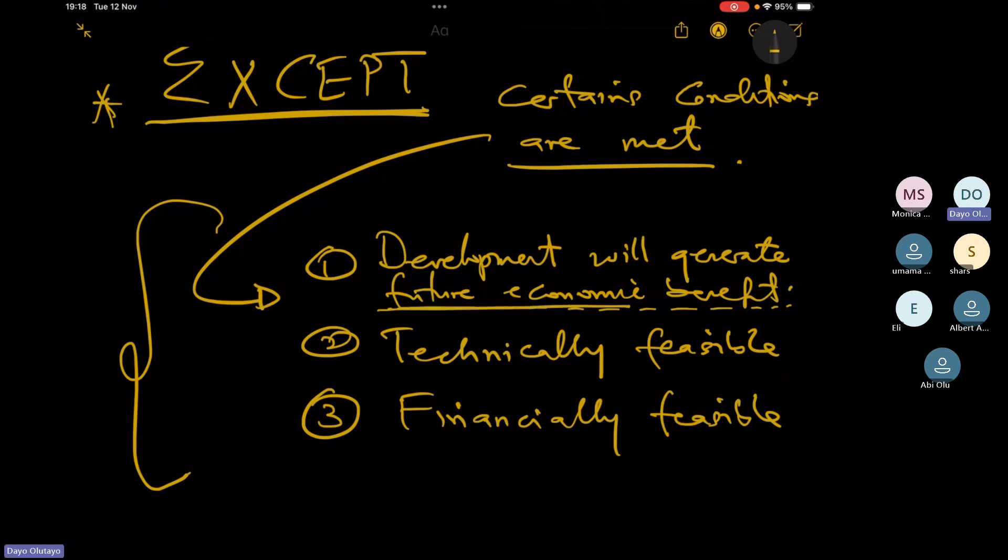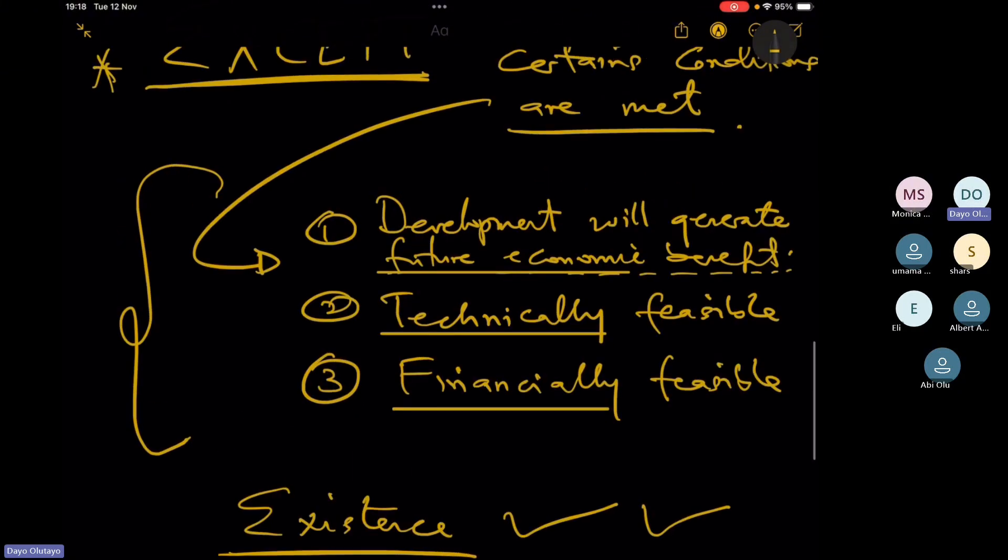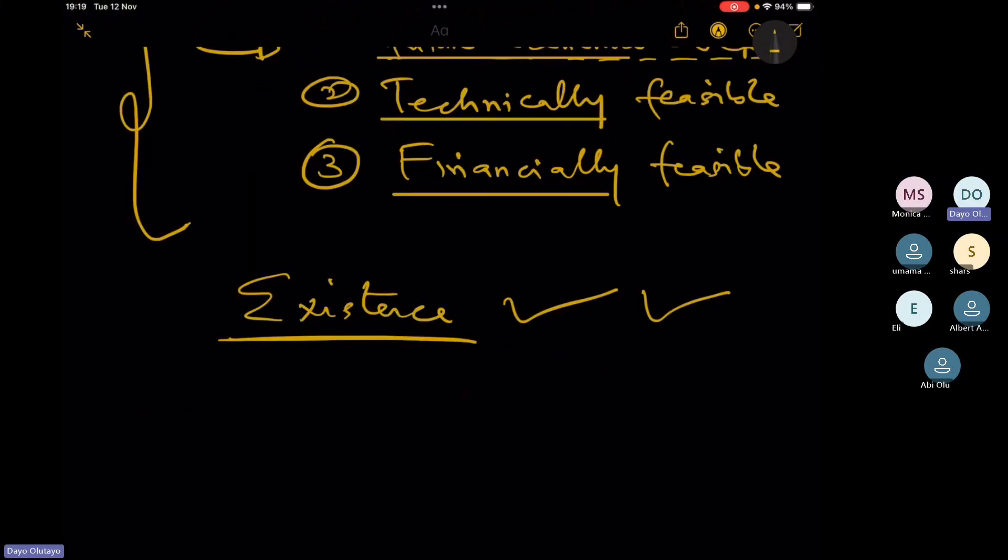Future economic benefits, technical feasibility, and financial feasibility. When those three things are met, then you can recognize an asset. And that is when existence as an assertion has been passed. That is how you get comfort on existence. By looking at these three conditions. So that is number one major thing that must be tested.